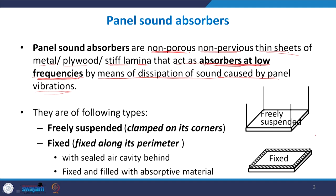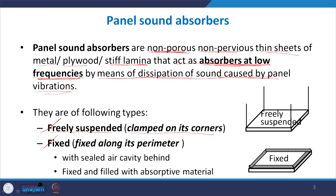Panel absorbers can be used in two ways. First, they can be freely suspended or clamped at their corners, hung from a ceiling using thin cables at every corner. On the other hand, we can have fixed acoustic panels where clamping is done throughout the entire perimeter, and they can be sealed with an air cavity or filled with an absorptive material.